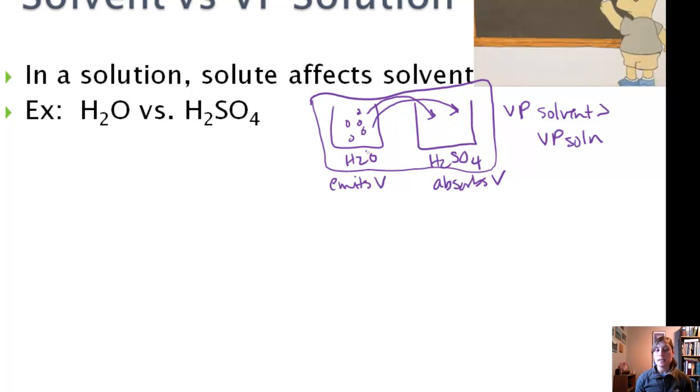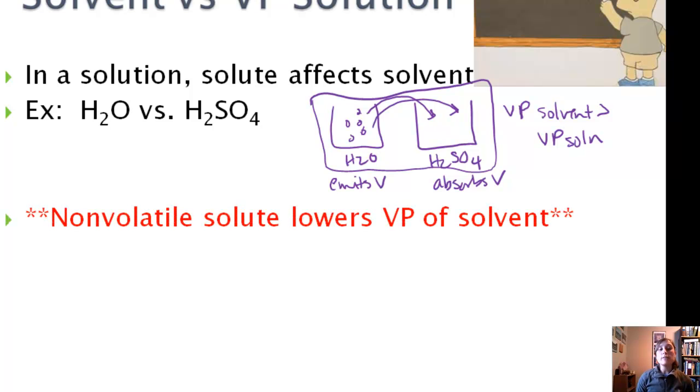And so eventually what will happen is this container, the volume decreases, it's totally empty, and here we have water and sulfuric acid. And so what that leads us to conclude is that a non-volatile solute will lower the vapor pressure of the solvent. The presence of this sulfuric acid, once they are mixed, lowers the vapor pressure. And so it's got a lower vapor pressure than just the solvent by itself.